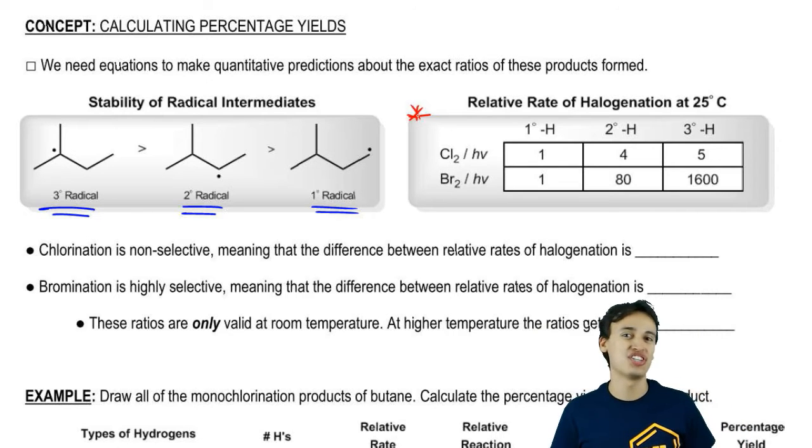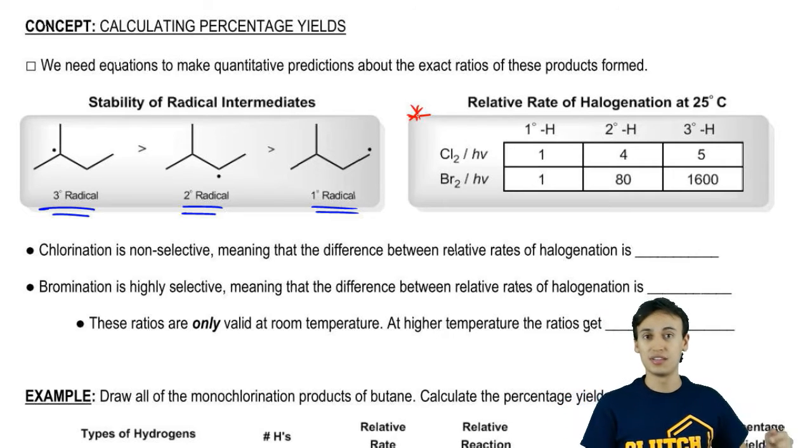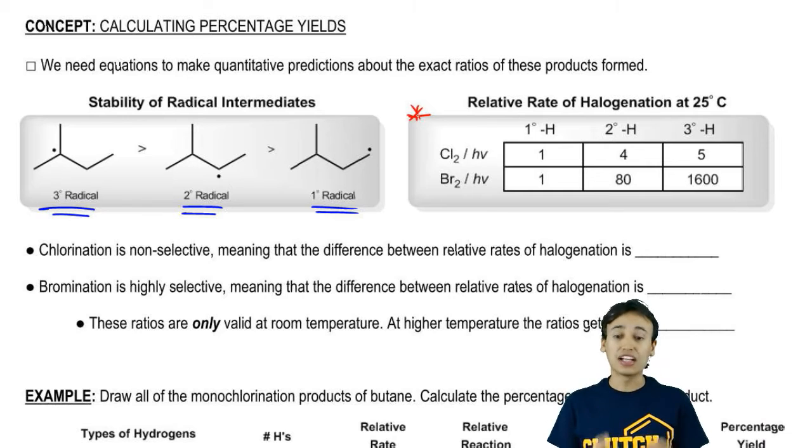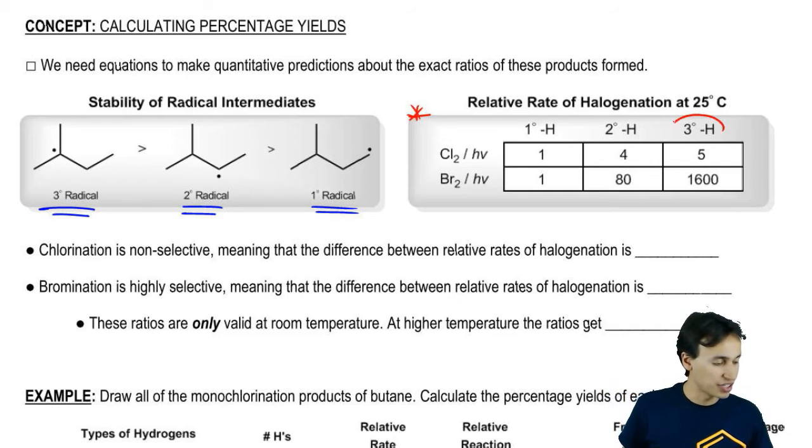Remember how we discussed how chlorination is very unselective, kind of makes bad decisions everywhere and bromination makes these awesome decisions? This can be quantified and the difference has to do with these halogenation rates. Notice that chlorination actually does prefer tertiaries.